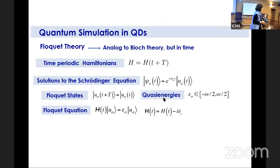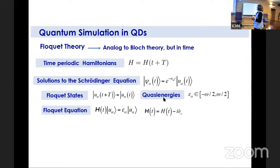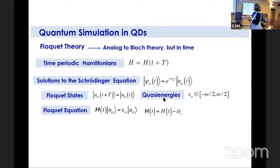Before discussing this in detail, I want to introduce Floquet theory for those unfamiliar. Floquet theory is analogous to Bloch theory but in the time domain — you have a Hamiltonian periodic in time instead of space. The solutions to the Schrödinger equation have Floquet states, which are periodic in time with the driving period, and quasi-energies defined in the Floquet-Brillouin zone, analogous to quasi-momenta in Bloch theory. One can also develop Floquet-Bloch theory to treat both time and spatial periodicities simultaneously.